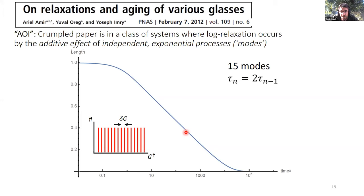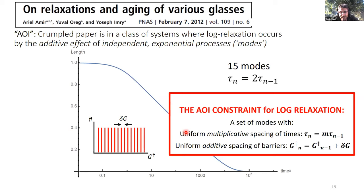So this is the AOI constraint. You can have logarithmic relaxation if you have uniform multiplicative spacing of times between the modes, which also corresponds to a uniform additive spacing of the barriers. Okay, so that's the AOI background.